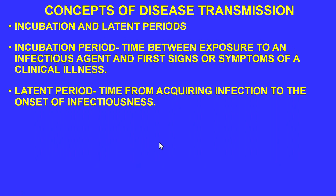Some important terms to clarify: the incubation period is the time between exposure to the infectious agent and the first signs or symptoms of clinical illness. The latent period is the time from acquiring the infection to the onset of infectiousness. Having the infection doesn't necessarily mean you are already spreading the pathogen — infectiousness begins when you start transmitting, whether through a sneeze, cough, stool, urine, or eye secretions.